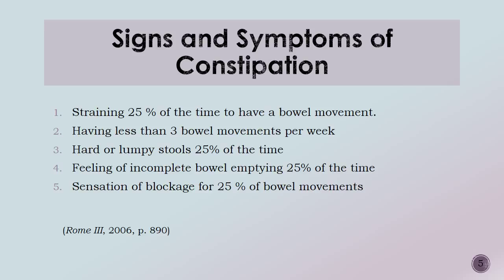Let's review the Rome 3 criteria. Number one: straining 25% of the time to have a bowel movement. Number two: having less than three bowel movements per week. Number three: having hard or lumpy stools 25% of the time with bowel movements. Number four: feeling of incomplete bowel emptying 25% of the time. Number five: a feeling of sensation of blockage for 25% of your bowel movements.